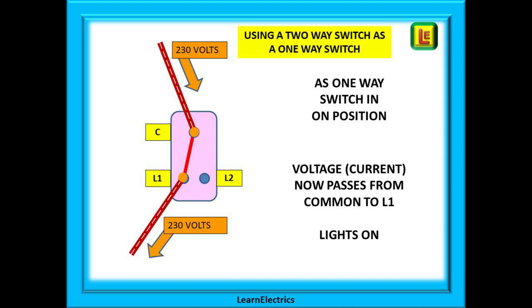By operating the switch we connect the common to L1. This allows electricity to flow from the common to terminal L1 and the switch is in the on position. The switch is on, electricity flows from common to L1, the lights are on.